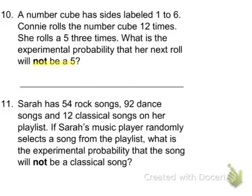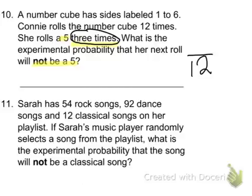We do not want a 5, and she rolled a 5 three times. So how many times did she get 5? She rolled 5 three times out of 12, which means she didn't get 5 nine out of 12 times.